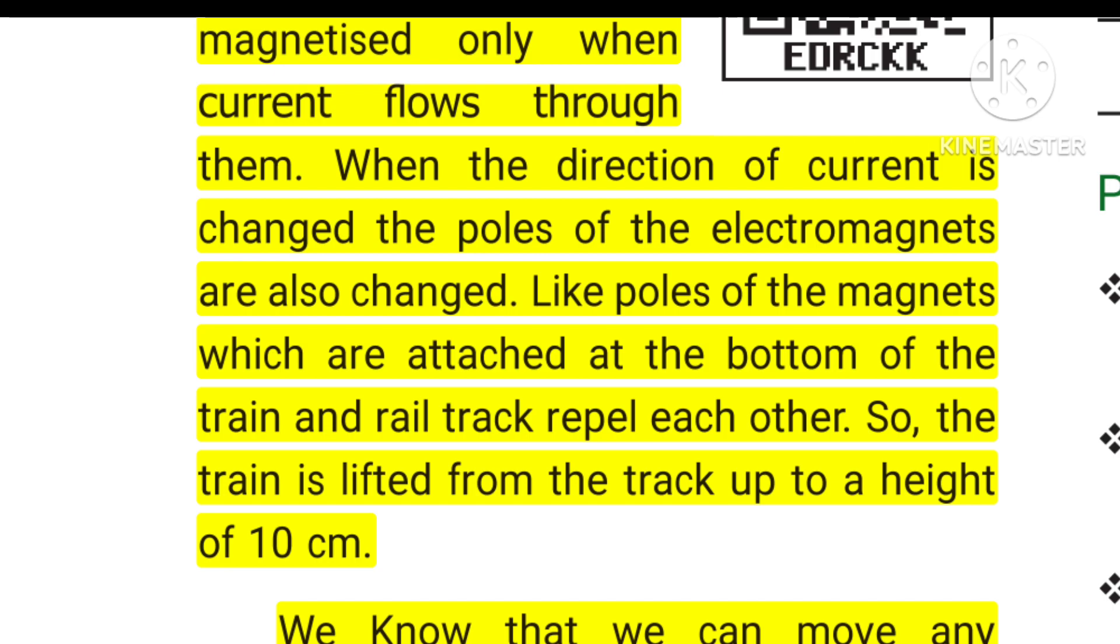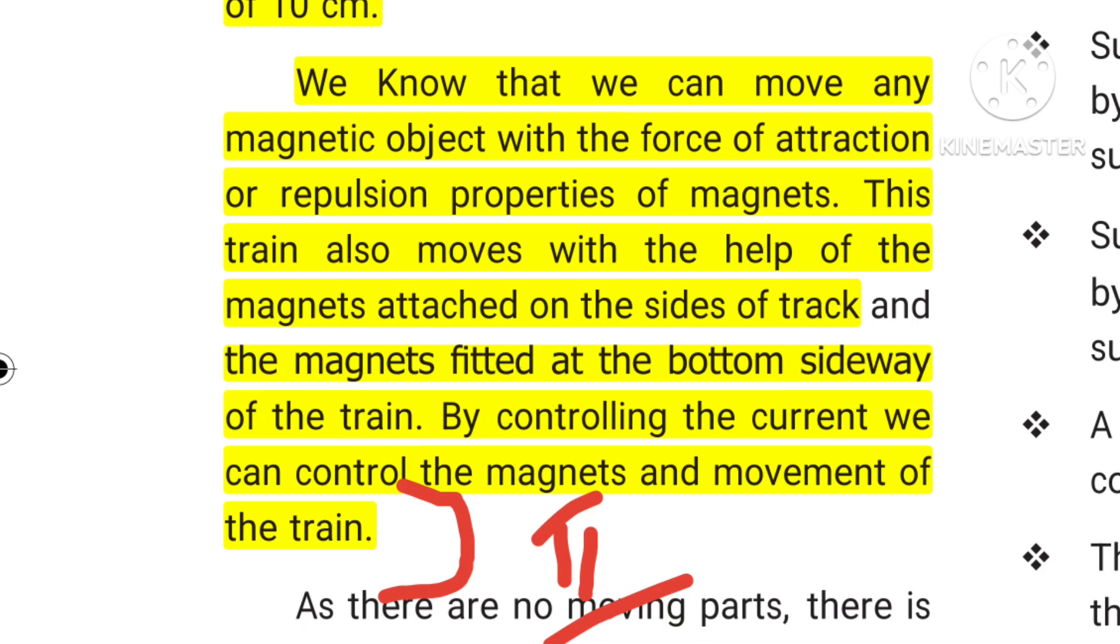When the direction of current is changed, the poles of the electromagnets are also changed. Like poles of the magnet which are attached at the bottom of the train and train tracks repel each other. So, the train is lifted from the track up to a height of 10 cm. With that, we can move any magnetic object with the force of attraction or repulsion properties of magnets. This train also moves with the help of the magnets attached to the side of the track and the magnets fitted at the bottom sideways of the train. By controlling the current, we can control the magnets and movement of the train.